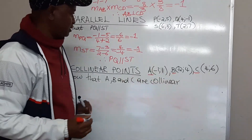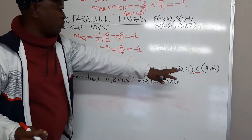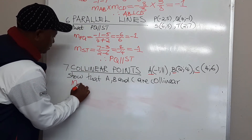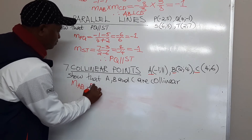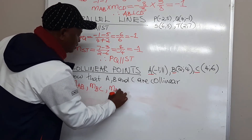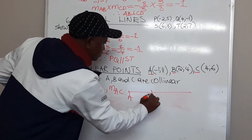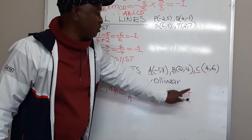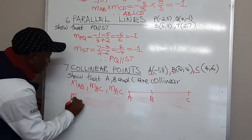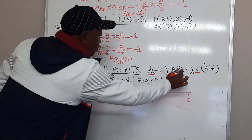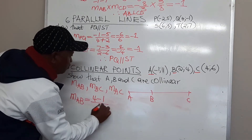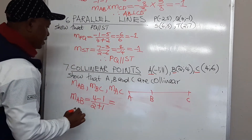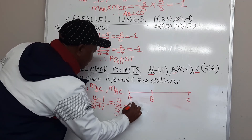Now, collinear points. The condition for points to be collinear is that the gradient must be the same throughout. We must find the gradient of AB, the gradient of BC, and the gradient of AC and compare, because we have a line with point A, point B, and point C. The gradient of AB equals y2 minus y1 over x2 minus x1: 4 minus 1 over 2 minus negative 1, which is positive. So, 3 over 3 gives the answer 1.